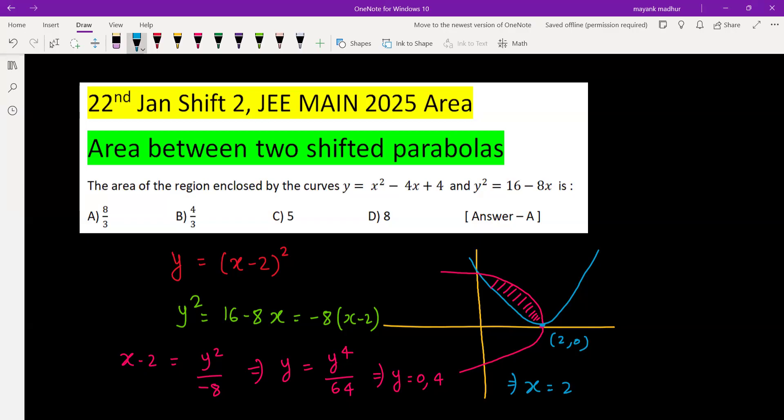And putting y equal to 4, we will get 4 square is 16, 16 by negative 8 is negative 2, so x value will be 0. So 0 comma 4, so these are the two points.